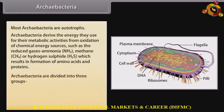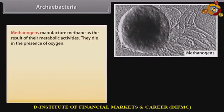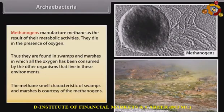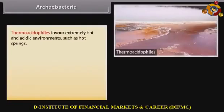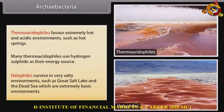Archaebacteria are divided into three groups: Methanogens, Thermoacidophiles, and Halophiles. Methanogens manufacture methane as a result of their metabolic activities. They die in the presence of oxygen and are found in swamps and marshes where all oxygen has been consumed. The methane smell characteristic of swamps and marshes is courtesy of methanogens. Thermoacidophiles favor extremely hot and acidic environments such as hot springs and use hydrogen sulfide as their energy source. Halophiles survive in very salty environments such as the Great Salt Lake and the Dead Sea.